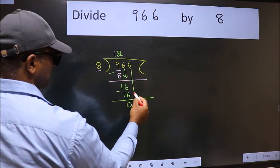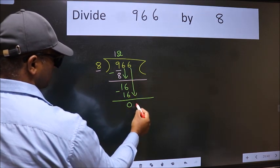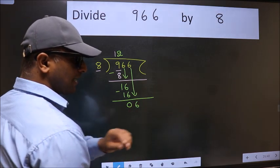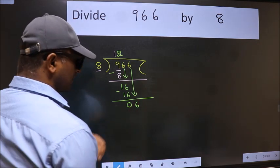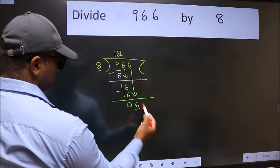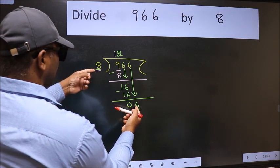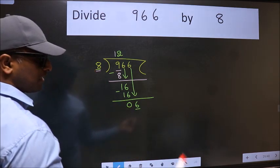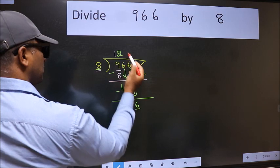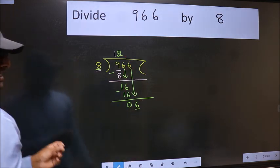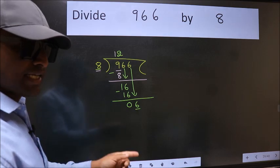After this, bring down the beside number. So, 6 down. After this step, the mistake happens. Here we have 6 and here 8. 6 is smaller than 8. So what many do is they directly put dot, take 0, which is wrong.